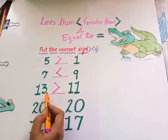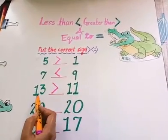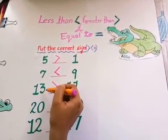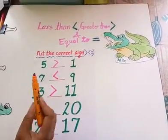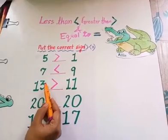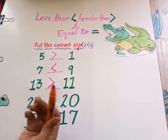In this sign, in this greater than sign, this side is wide open. Remember children, the open end goes to the bigger number, like Ellie's mouth.